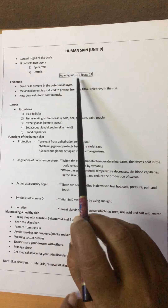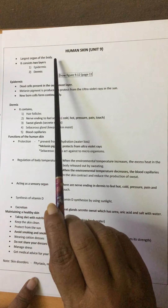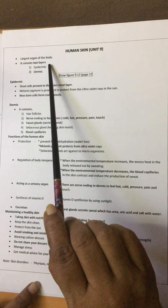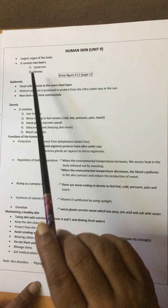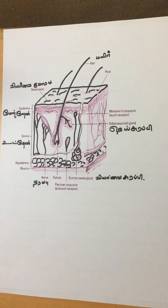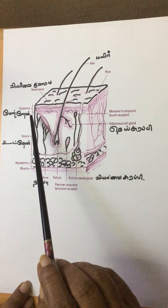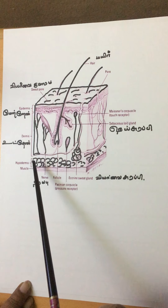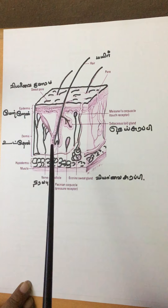Grade 8, Unit 9 - The Human Skin. The largest organ of our body is the skin, and it gives protection to our body. It consists of two layers: the epidermis and the dermis. The outermost layer is the epidermis, the inner layer is the dermis, and at the bottom there is a hypodermis which contains fat deposits.